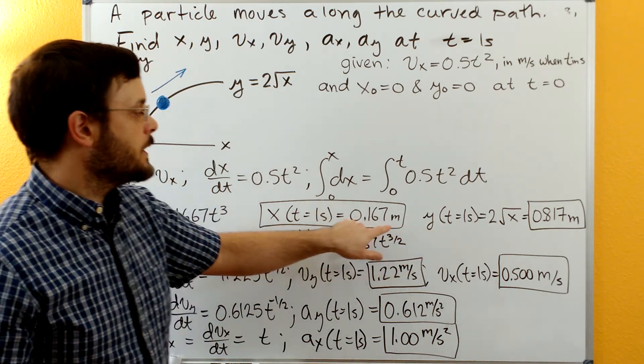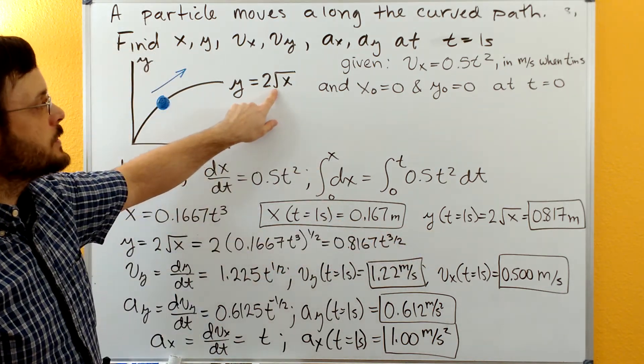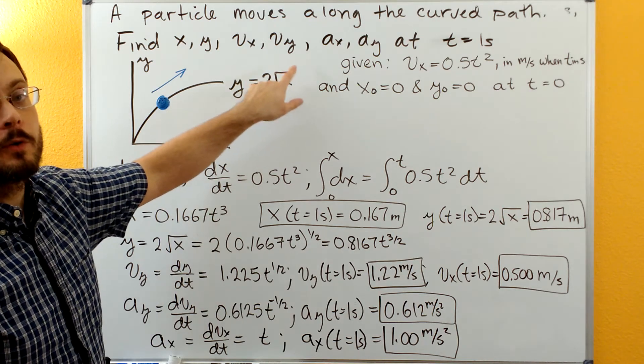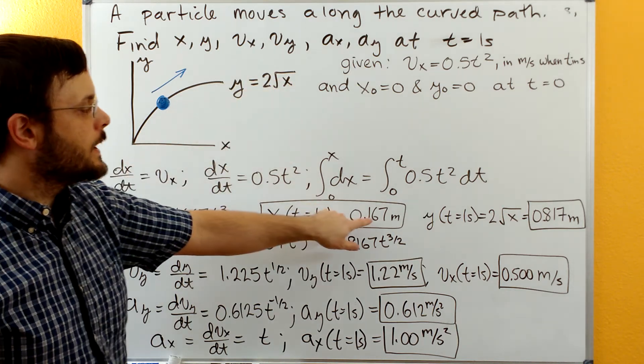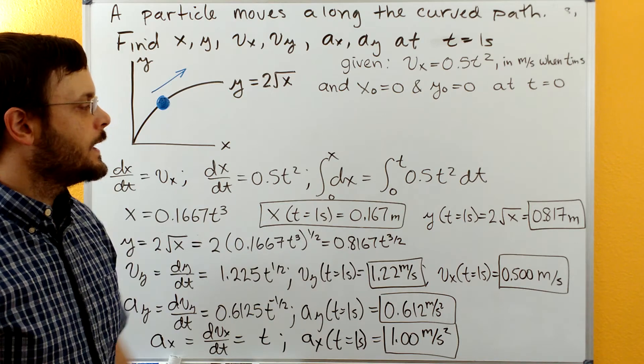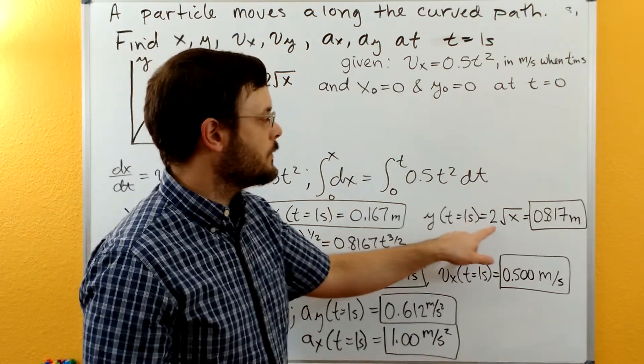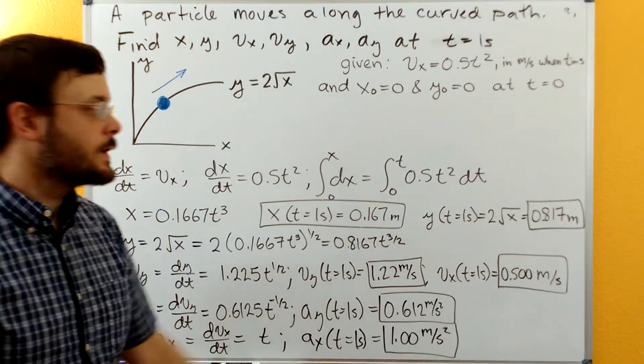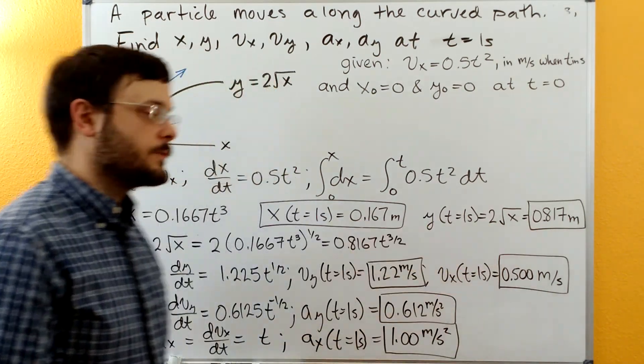And then we can plug this value for x back in our function here. So in place of the square root x, we'll have square root 0.167, and then we'll get our value for y. Y equals 2 times the square root of 0.167, and we get 0.817 meters.